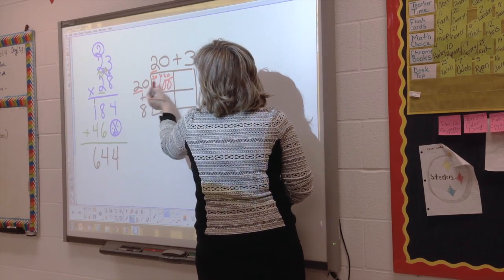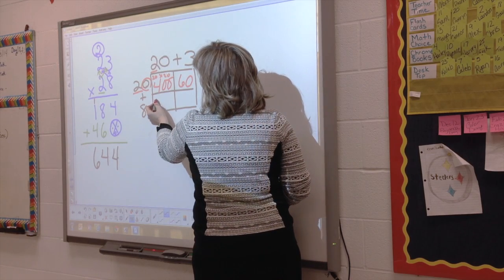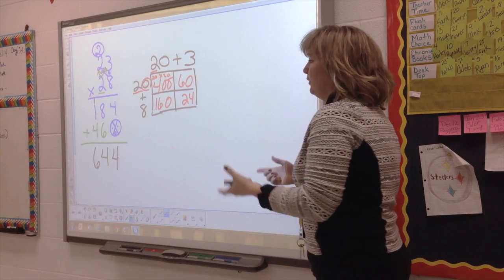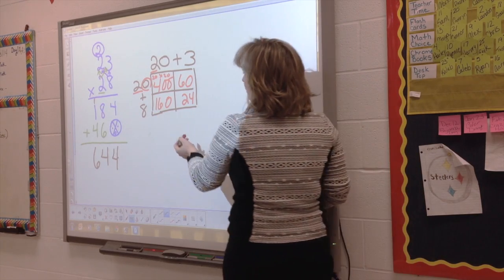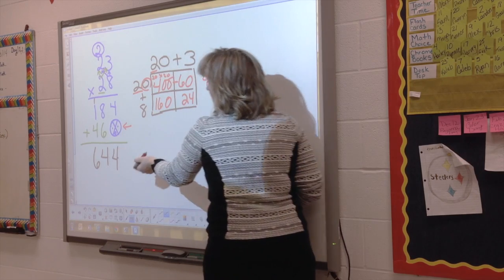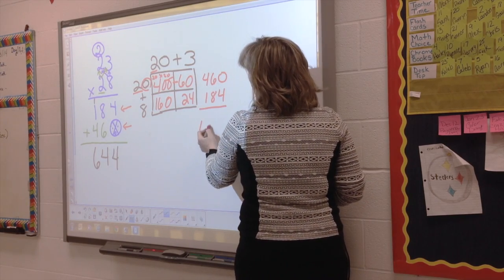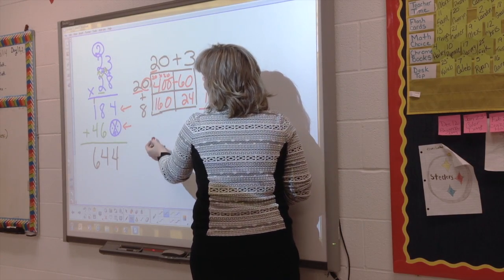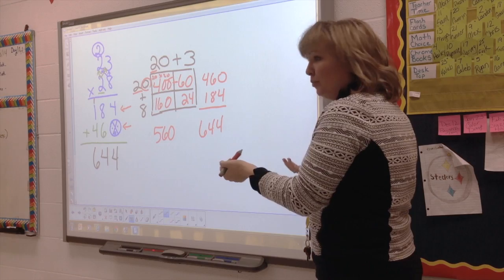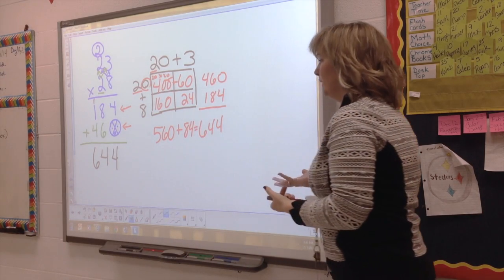This box would be 20 times 3 — so 2 times 3 is 6, and I have one set of tens, so that's 60. Over here, 2 times 8 is 16, one set of tens, that's 160. And 8 times 3 is 24. Now if I add all of those up — 400 plus 60 is 460, plus 160 plus 24 is 184 — I should still get 644. It doesn't matter which way I add my numbers; it's still going to be the same.